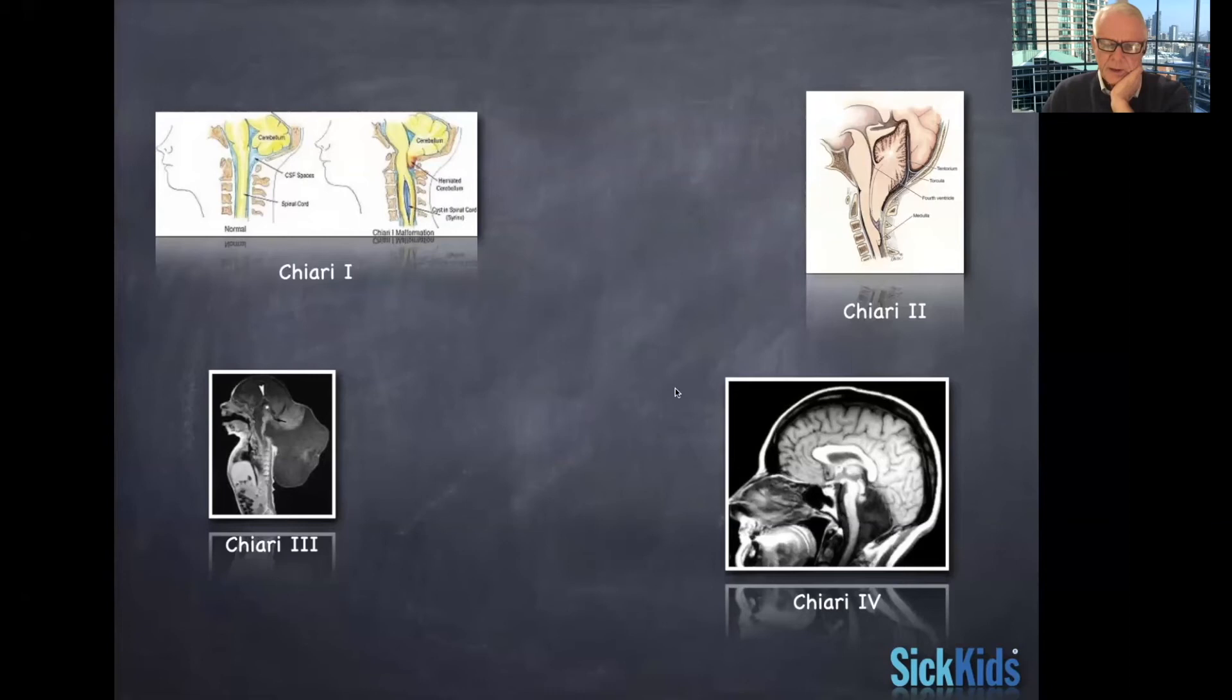For all intents and purposes, these latter two, I don't see very often. None of us does. They're pretty rare conditions. But Chiari 1 and Chiari 2 are the most common. And Chiari 1 is way more common nowadays than Chiari 2, given the fact that spina bifida, at least in the developing world, is a vanishing disorder and is something that is seen less and less.